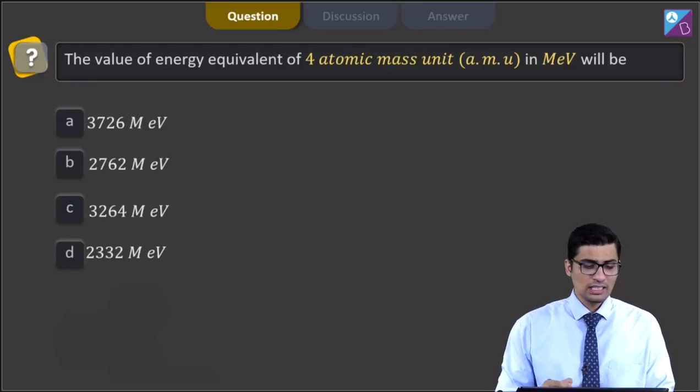There are four options: 3726 mega electron volts, 2762 mega electron volts, 3264 mega electron volts, or the fourth option which is 2332 mega electron volts.